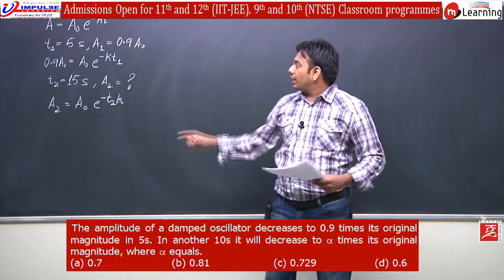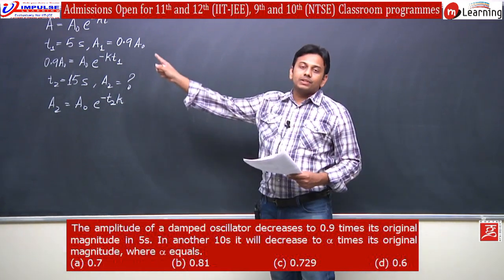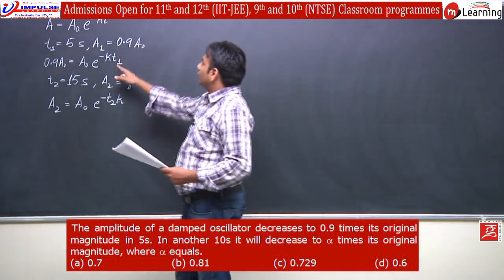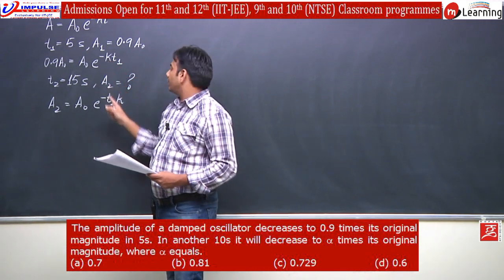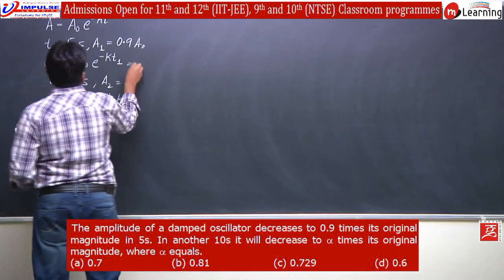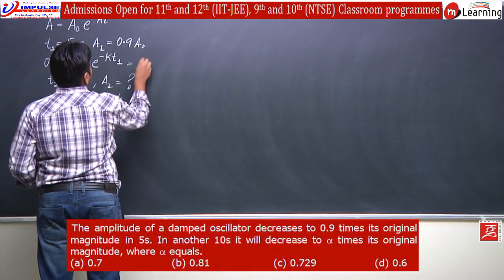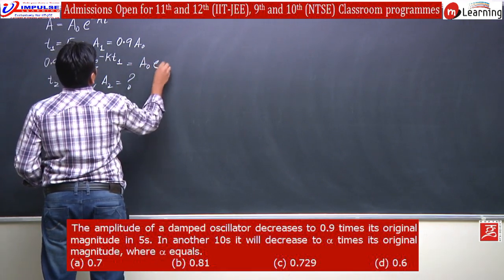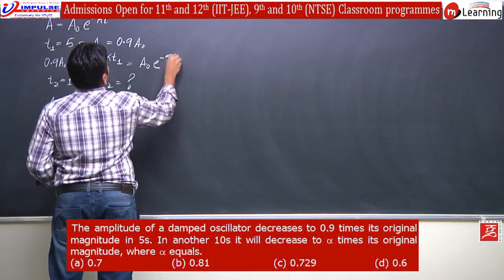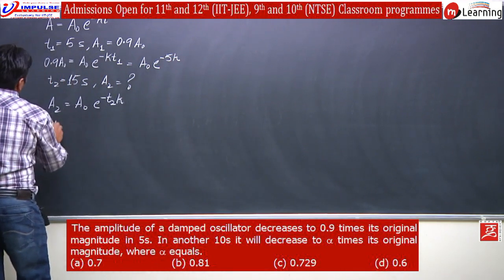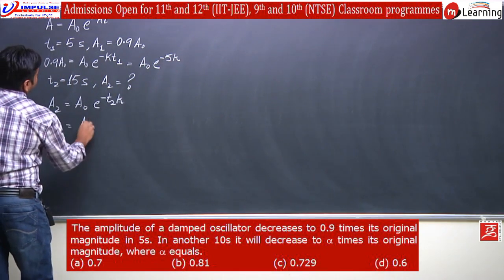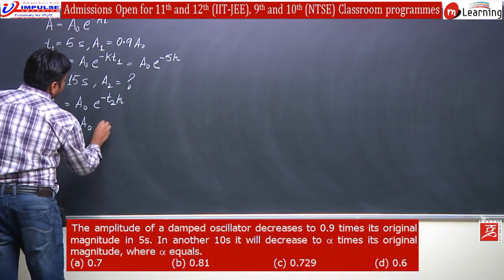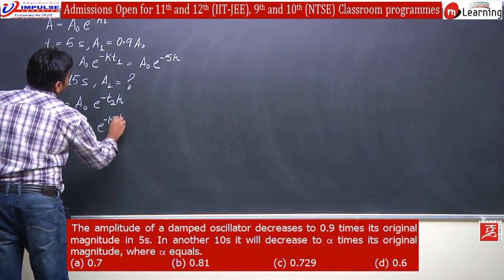Now, clearly we can see t2 is 3 times t1. If we put the values here, we'll get 5k here, and here we'll get 15k. A0 e to the power minus 5k, here it will be e to the power minus 15k.